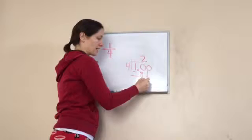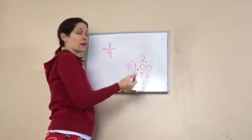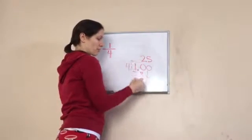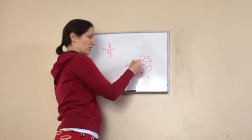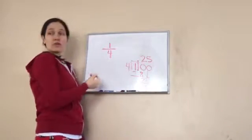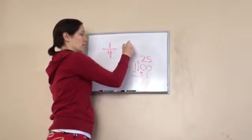Add another 0, bring it down. 4 goes into 20, 5 times. 5 times 4 is 20. That ends it. Okay, bring my decimal up. One-fourth is 0.25.